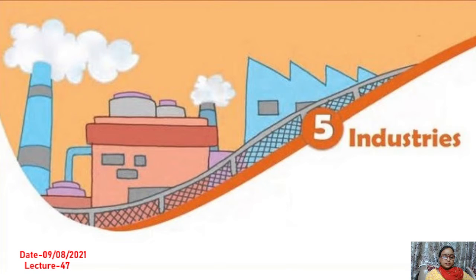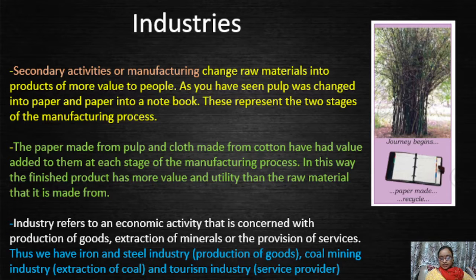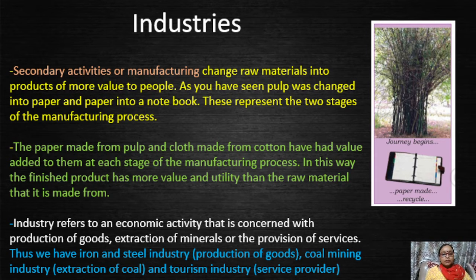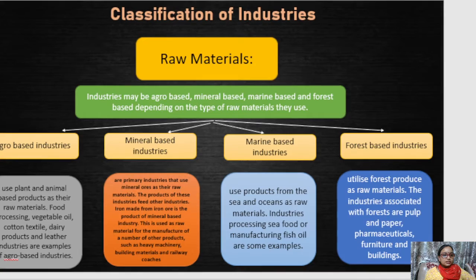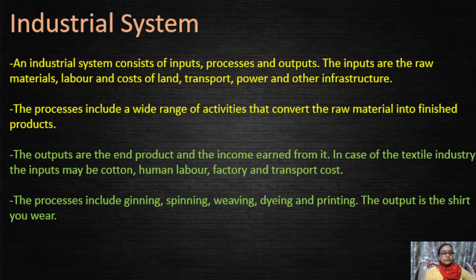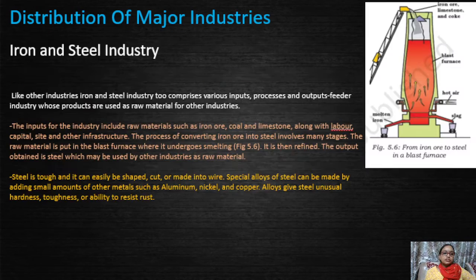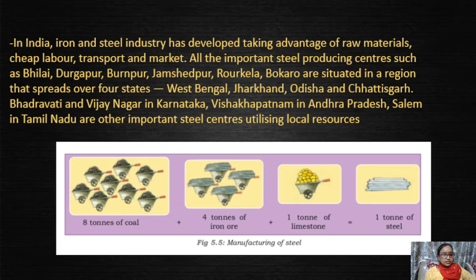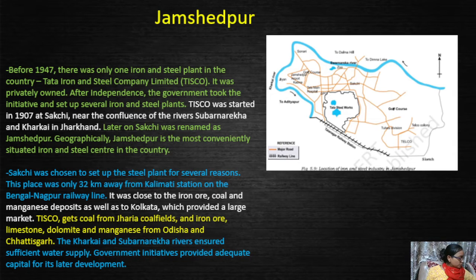Good morning class 8. We are on chapter number 5, Industries, which is related to the geography portion. In this portion we have covered that industry is a type of secondary activity, and industries can be established based on material, labor, and capital. We have done classifications, factors affecting the location of industries with the help of a diagram, industrial systems, industrial regions, distribution of major industries, and in the previous class we did iron and steel industry in detail.